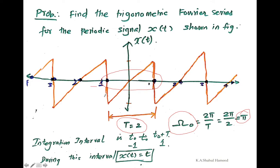During this interval, that is minus 1 to plus 1, this is the ramp function. When t increases, x(t) will also increase. So it is a ramp function. We are going to consider x(t) equal to t to solve the problem. We are going to consider only one time period and use it to find the Fourier series coefficients for this particular waveform.